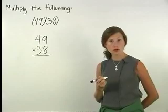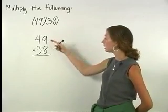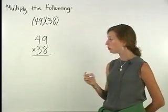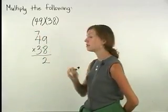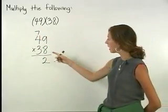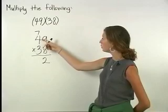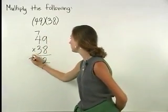Beginning with 49 times 8, we have 8 times 9, which is 72. So we write a 2 in the units column and carry the 7. Next, 8 times 4 is 32, plus the 7 we carried is 39.